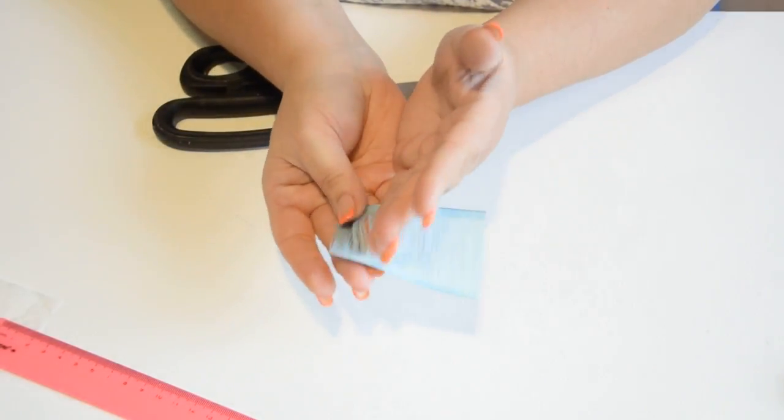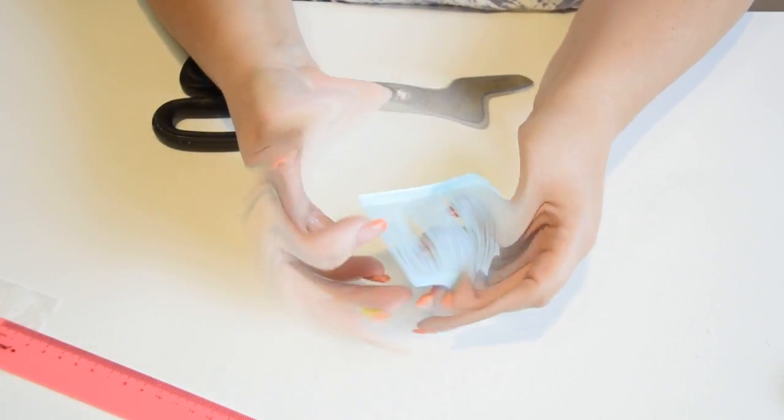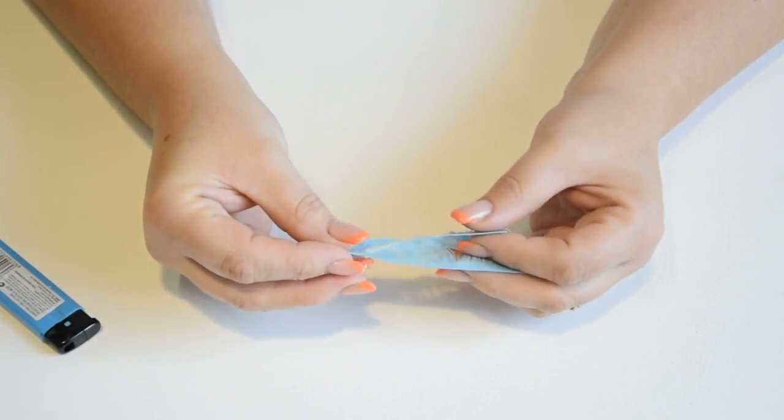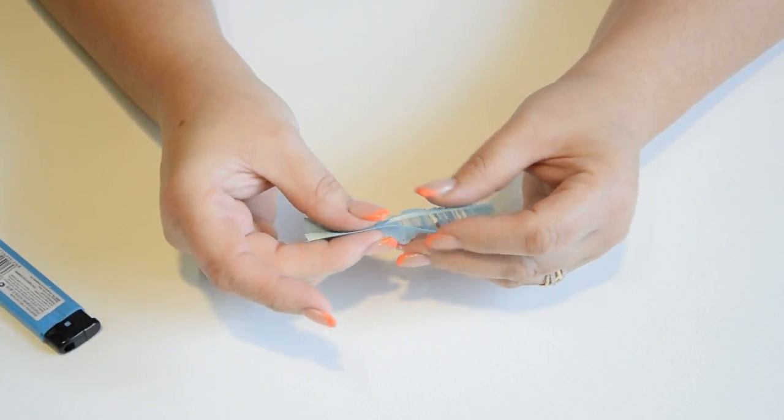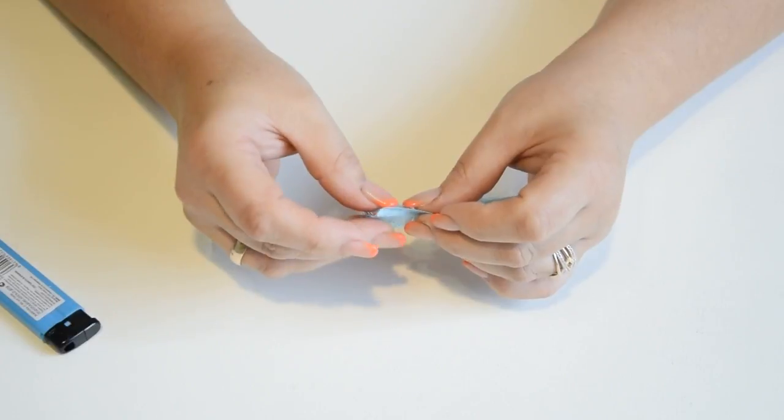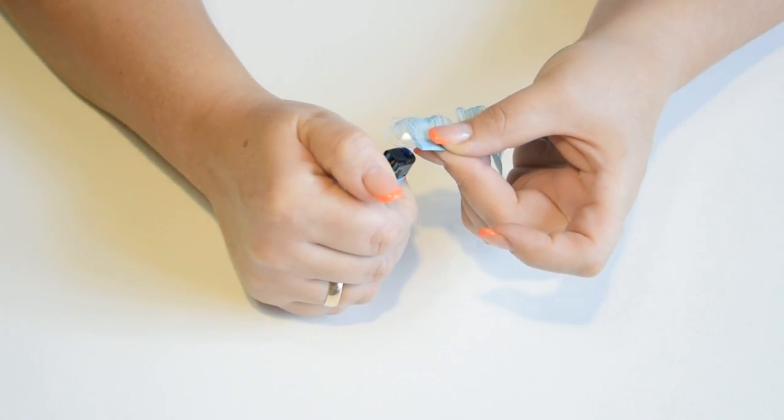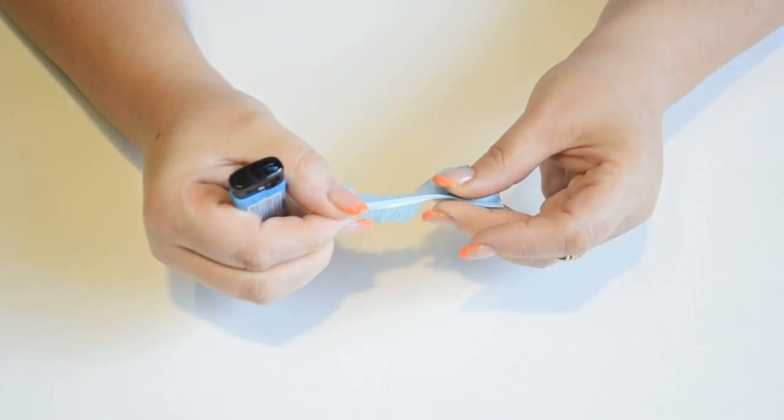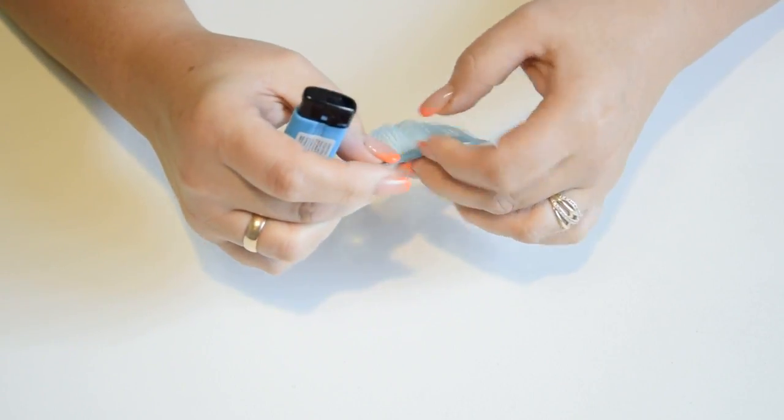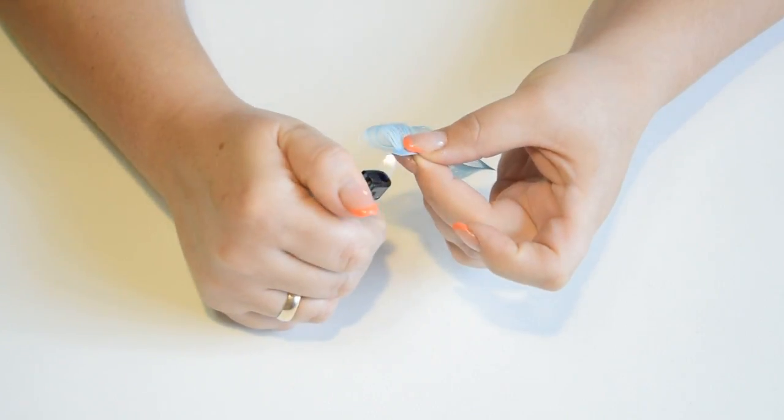This is what should result. We fold our ribbon wrong sides inward, align the cuts, and fix the ribbon on both sides with a small flame.